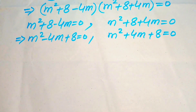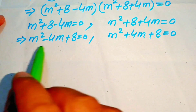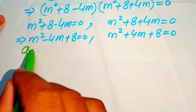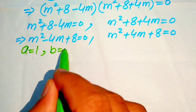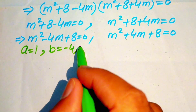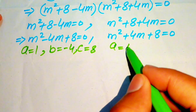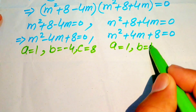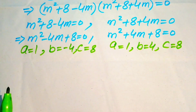Since these are quadratic equations, we use the quadratic formula. For the first equation, the coefficients are a equals 1, b equals minus 4, and c equals 8. For the second equation, a equals 1, b equals 4, and c equals 8.